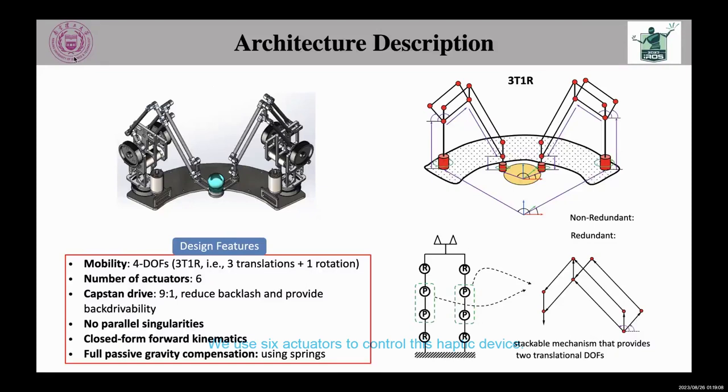We use six actuators to control this haptic device. Capstone drive is used to reduce backlash and provide backdrivability. Because of using redundant actuation, all of the parallel singularities were avoided, and full passive gravity compensation can be achieved by using springs.